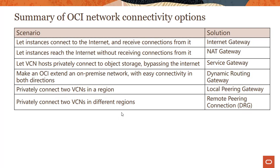To summarize, OCI supports several gateways: an internet gateway (bidirectional to internet), NAT gateway (unidirectional from private subnets with address translation), service gateway (from private subnets to OCI public services like object storage), and dynamic routing gateway (for private on-premises connectivity). The two additional options covered in this module are the local peering gateway for connecting VCNs in the same region, and remote peering connection via DRG for connecting VCNs in different regions — both enabling private IP communication.